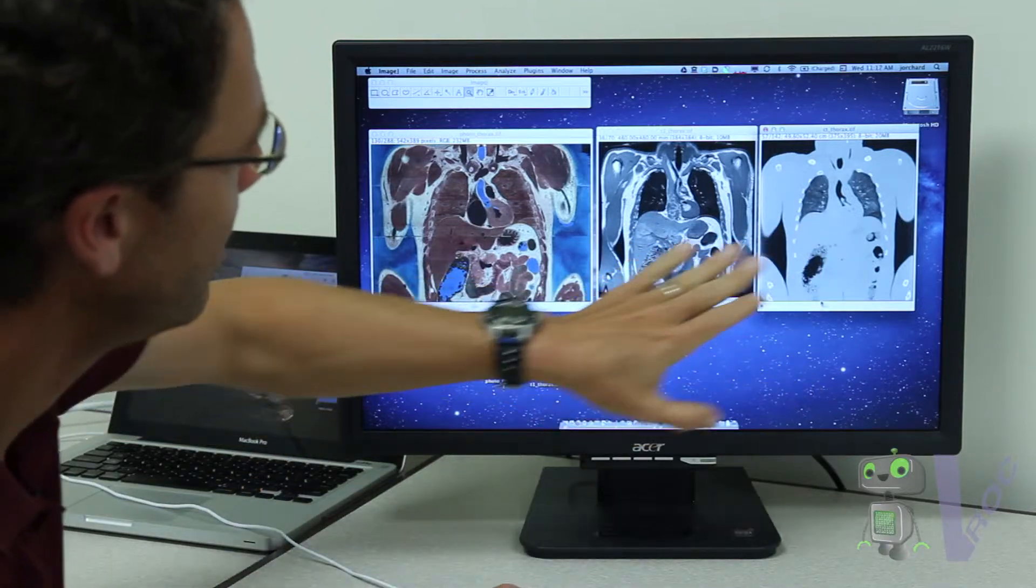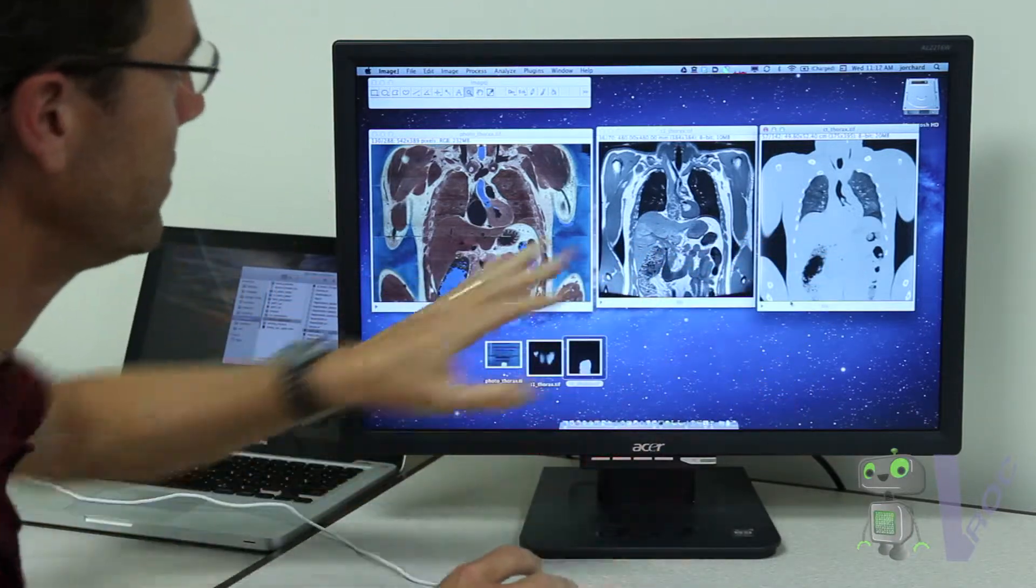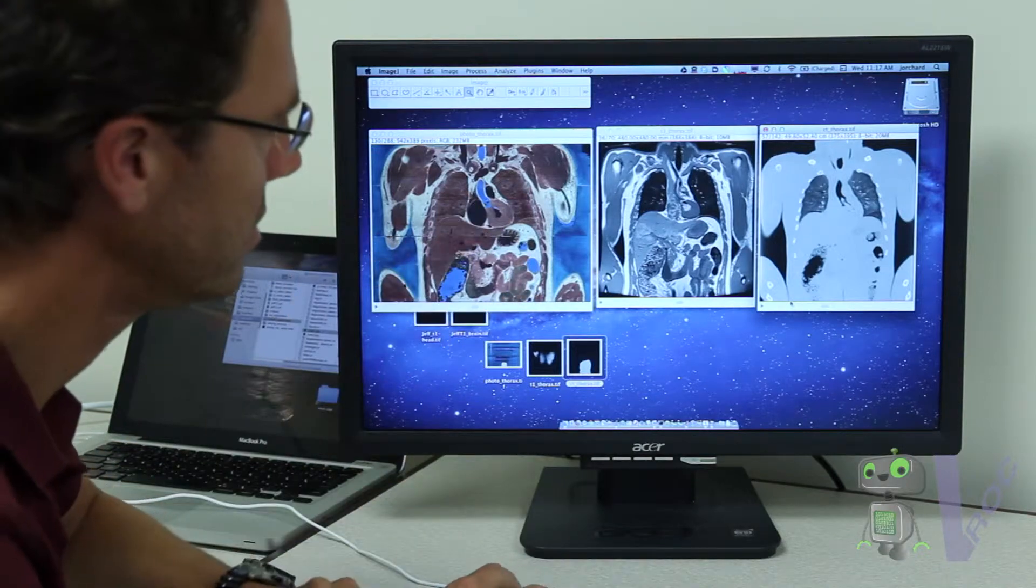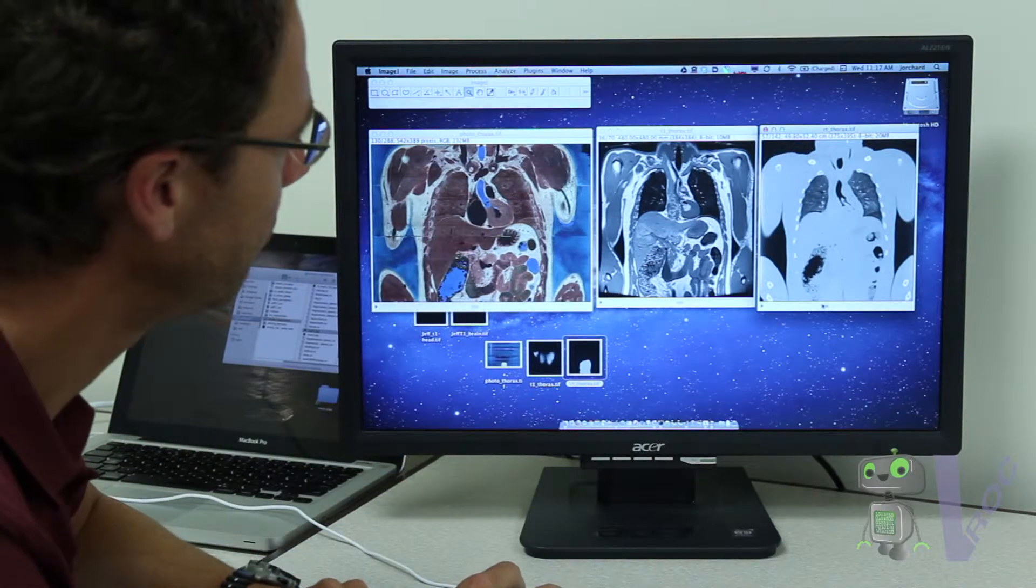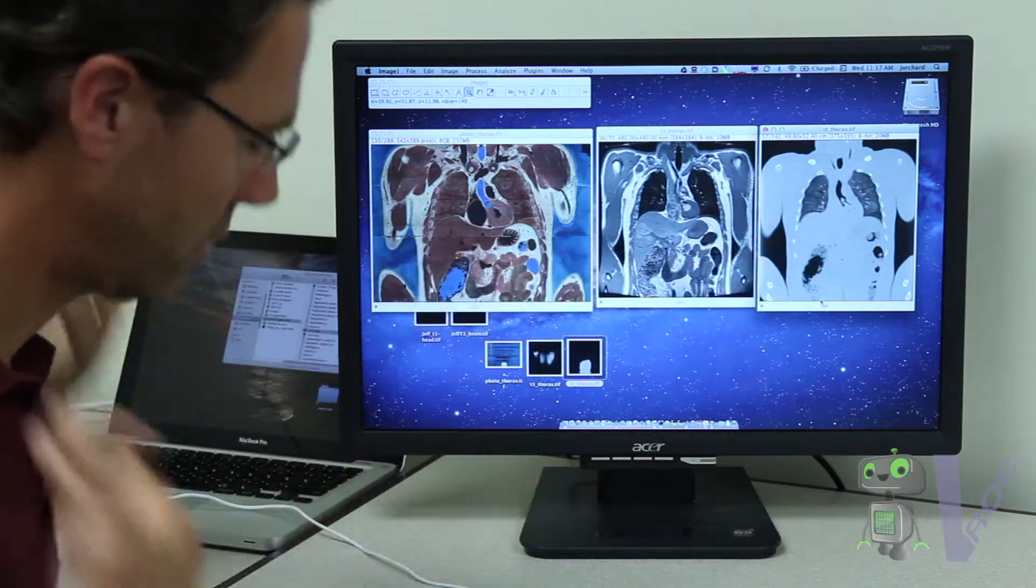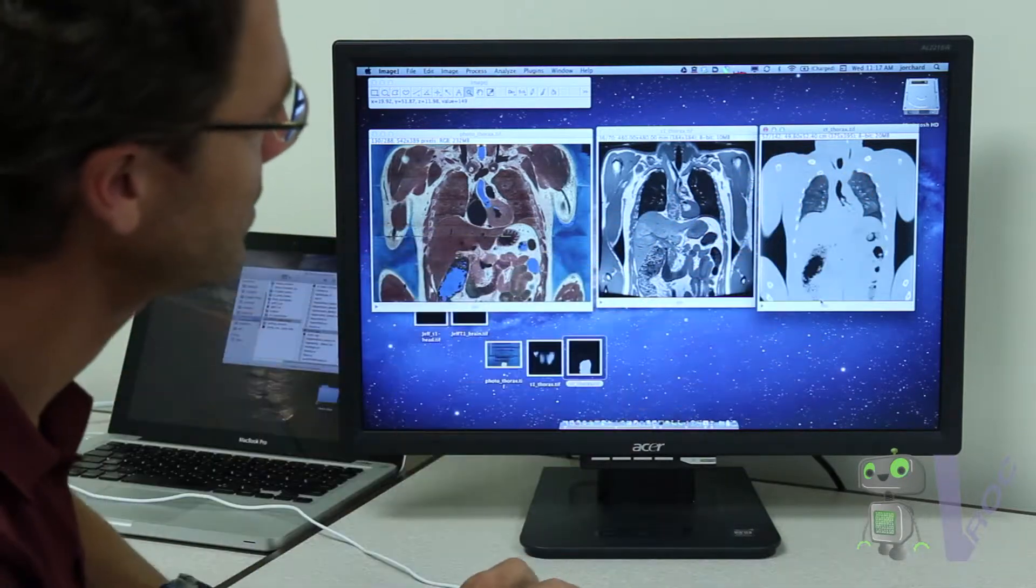Now, the good thing about having two different imaging modalities—this is MRI and this is a CAT scan—is they show different things. There are different advantages. Since we're looking at basically a cross-section through his thorax...